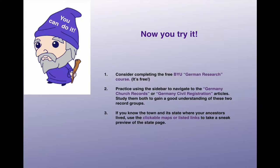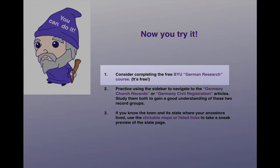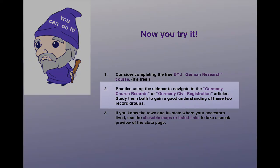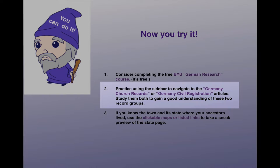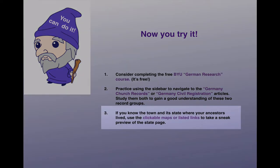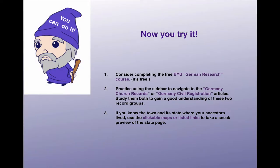Now, you try it. Check out the course offerings on the genealogy main page and particularly consider taking the BYU research course for free. You're going to rely very heavily on church records and civil registration records, so prepare yourself by clicking on those two articles in the sidebar and studying them carefully. If you already know the town and its state where your ancestors lived, take a sneak preview of the state page — use the clickable maps and lists to get there.